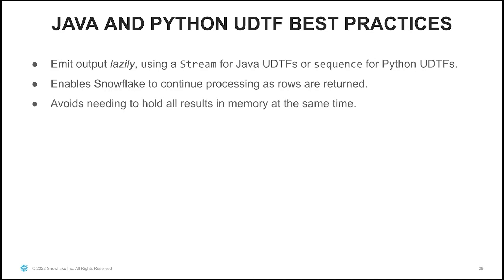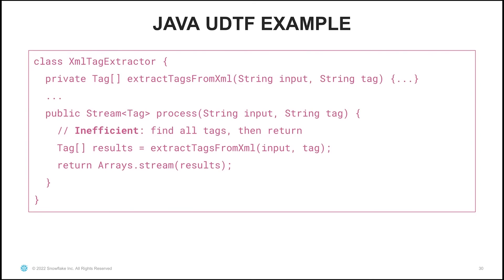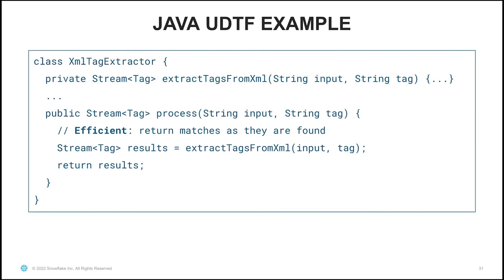Now some best practices on Java and Python UDTFs. One thing to keep in mind when defining your UDTFs is that you should try to emit output lazily. For Java UDTFs, this means using a stream, and for Python UDTFs it means using a sequence. If you return a stream or a sequence, it enables Snowflake to continue processing as rows are returned, and it avoids needing to hold all results in memory at the same time. Here's a bad example — extracting tags from XML by building up an entire array and then using Arrays.stream to return those results — because you need to extract all of the tags before returning any of them. Ideally, you should return a stream of them as you find each tag in the XML. In the good example, I'm returning matches as they are found, using a stream that is evaluated lazily, calling a helper method that returns the tags one at a time.